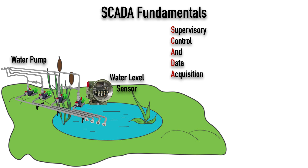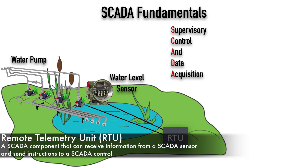SCADA needs another component to receive information from the sensor and, when instructed to do so, send a signal out to the control. In this example, we need something to tell the water pump to kick on. That SCADA component is called an RTU — a remote telemetry unit. It can receive information from the sensor and, when instructed to do so, it can send a signal out to the water pump to turn it on.